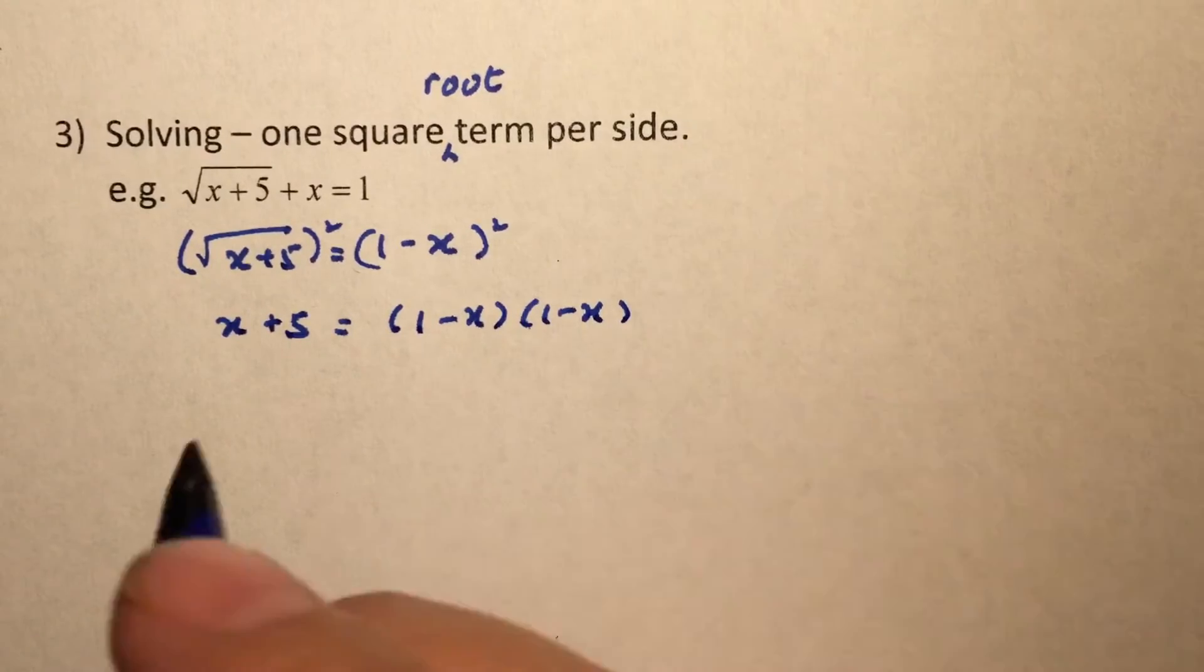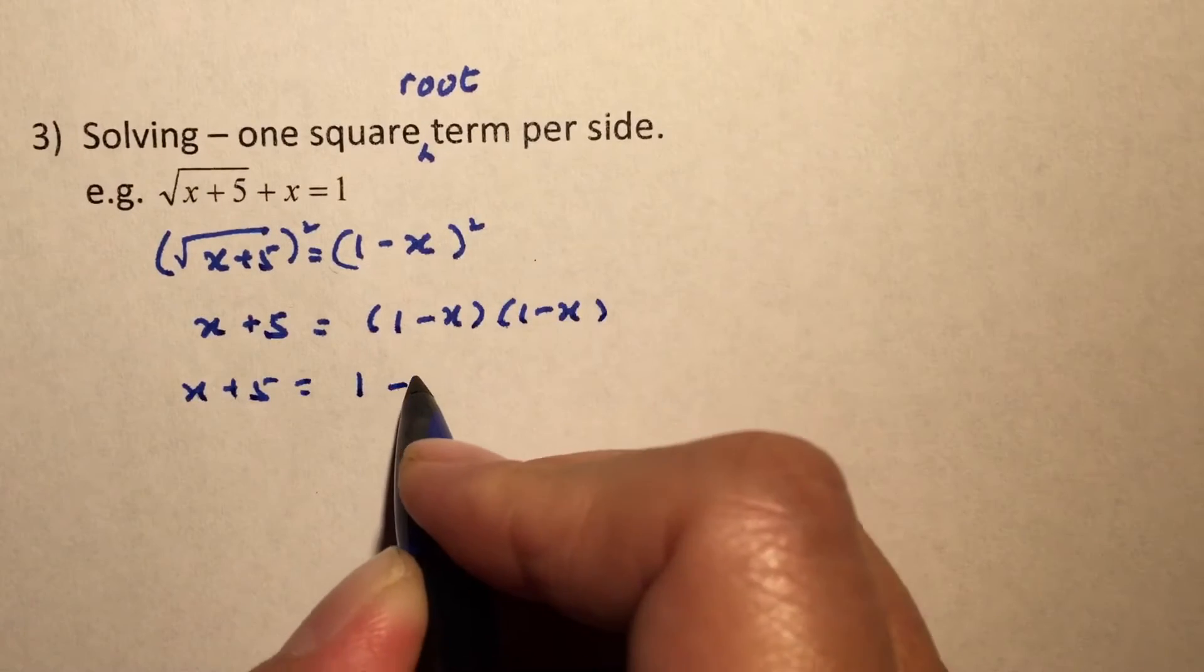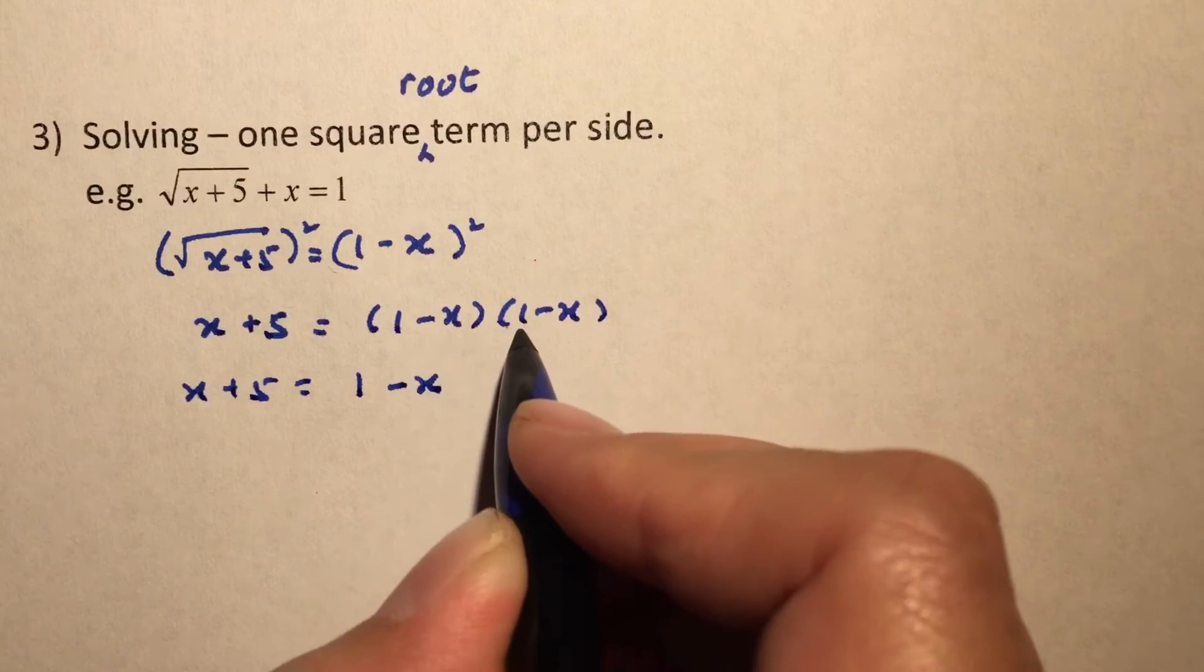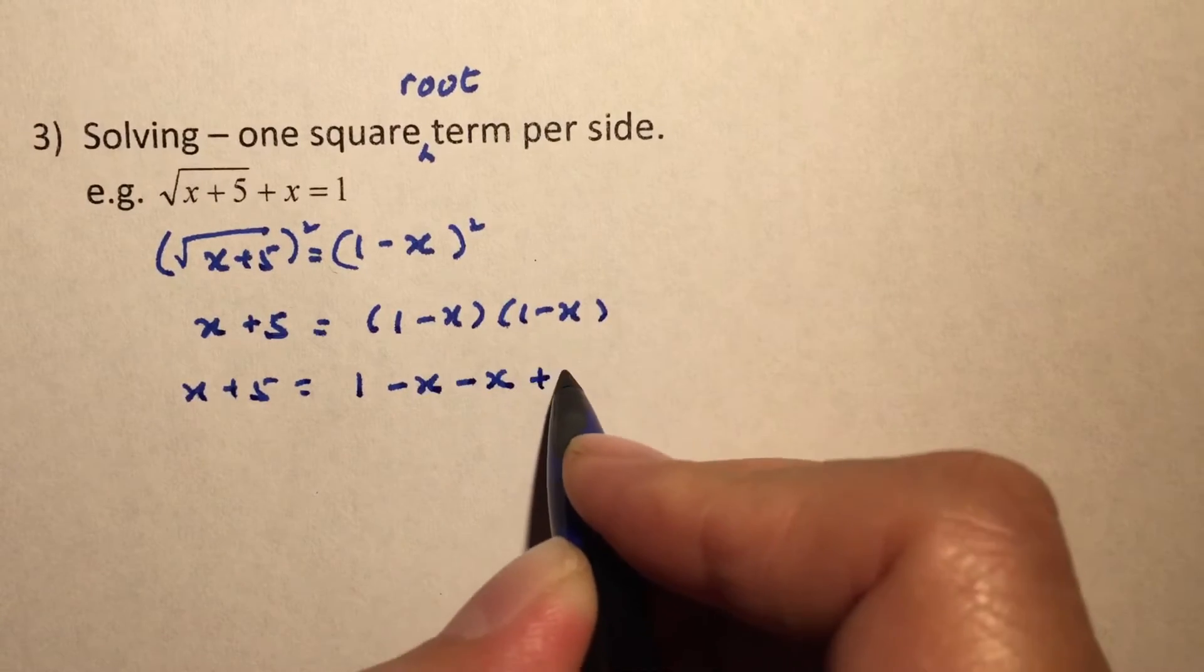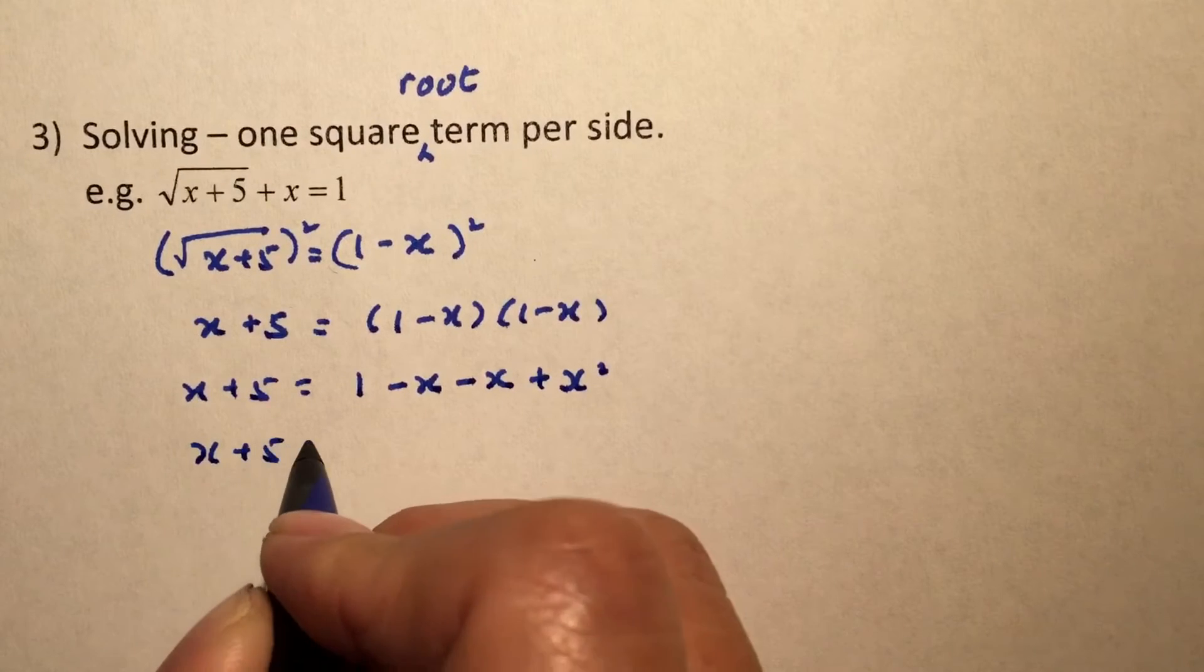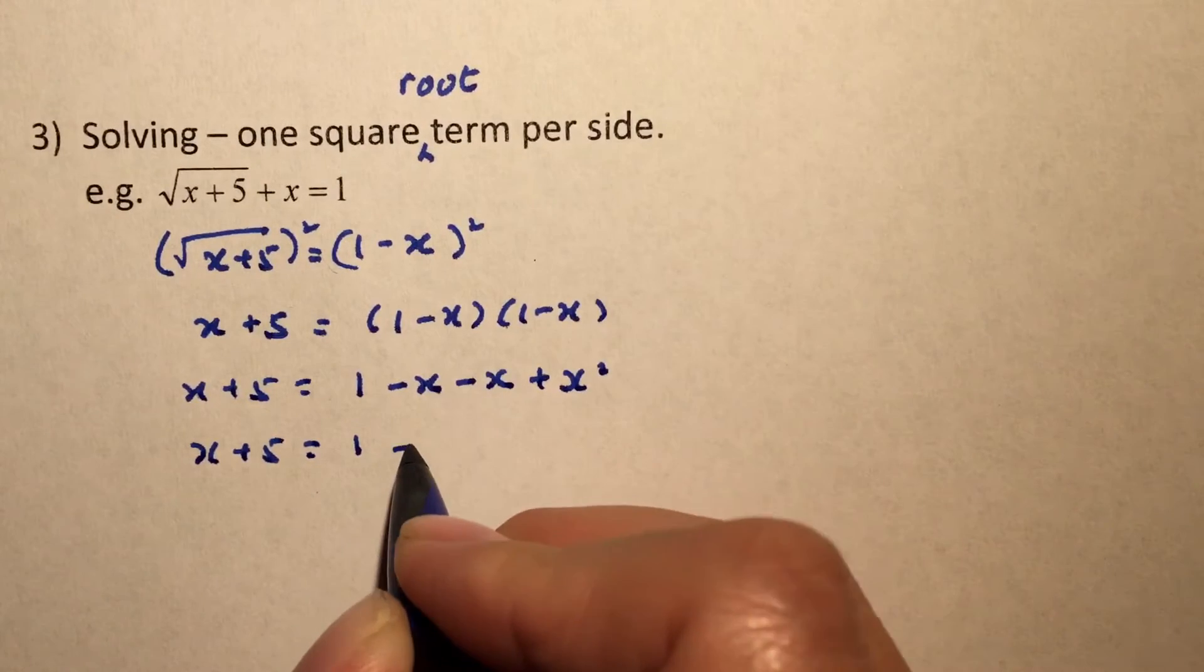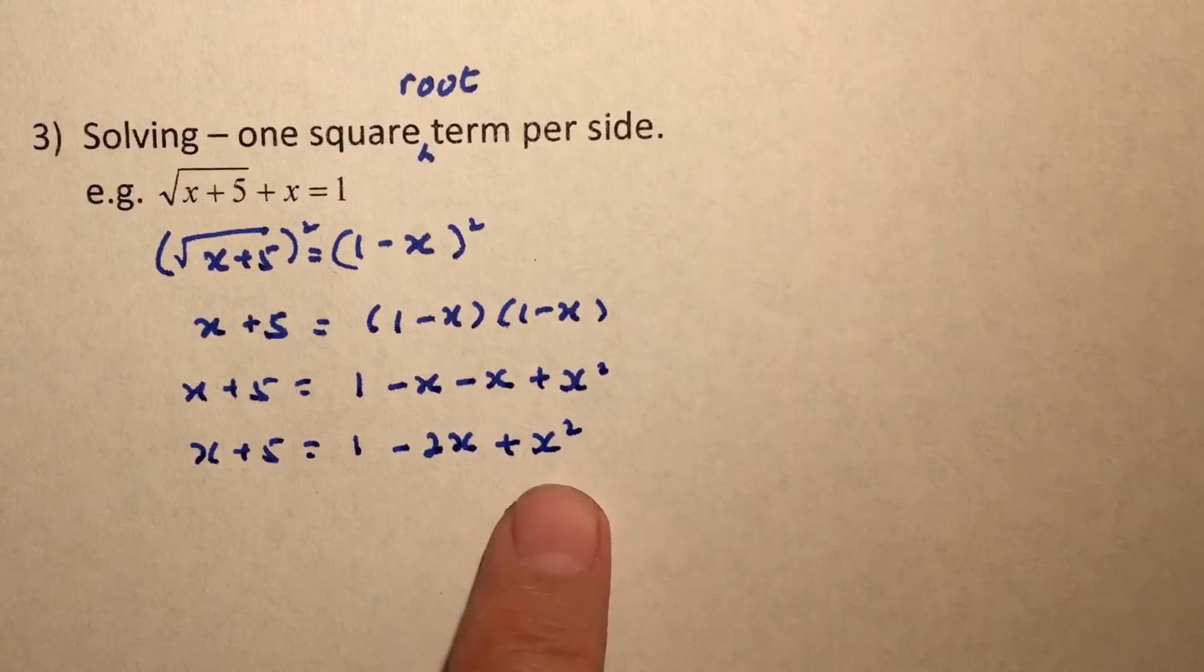We will have 1 times 1 is 1. 1 times negative x is negative x. Negative x times 1 is negative x. Negative x times negative x is plus x squared. And this will actually give us 1. Be careful. Minus x minus x will give us negative 2x. And so this is the expansion.